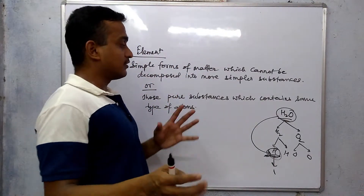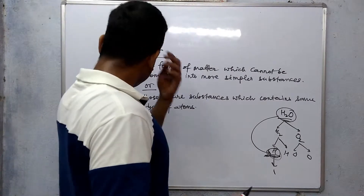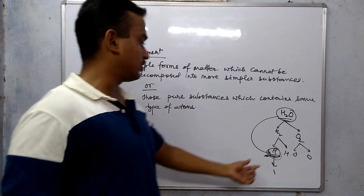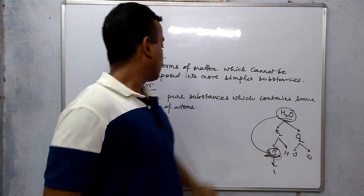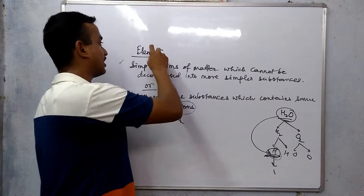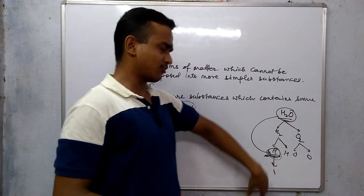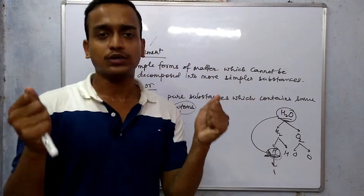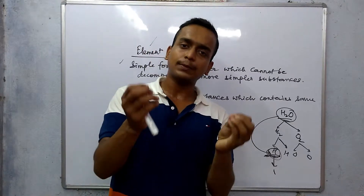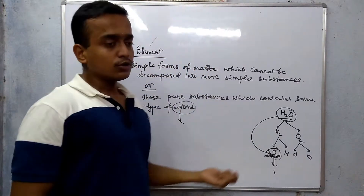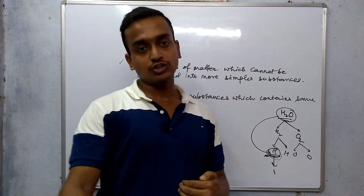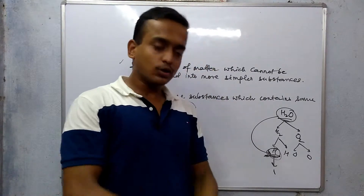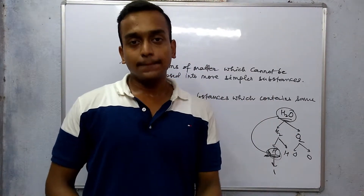Those pure substances which contain only one type of atom — and that's true, because hydrogen will contain only hydrogen atoms. Atoms are the smallest particle of an element. Don't say electron, proton, or neutron. When you have a paper and you cut it, it will make two parts that will also be paper — you can see it in any way.